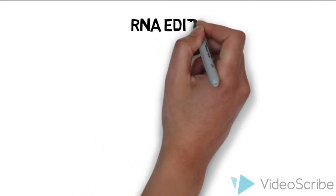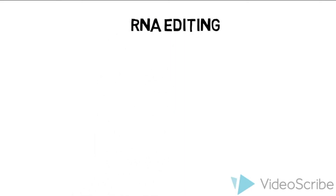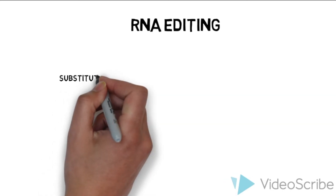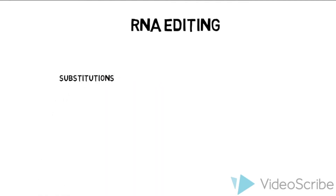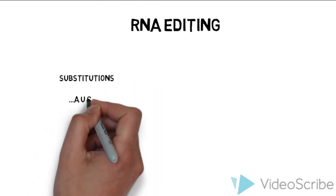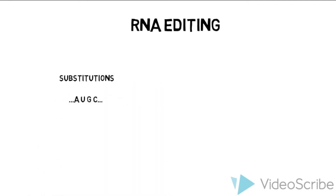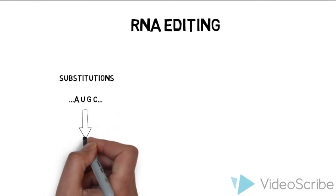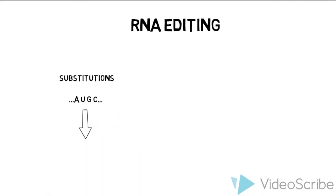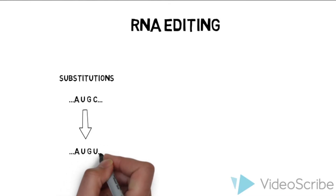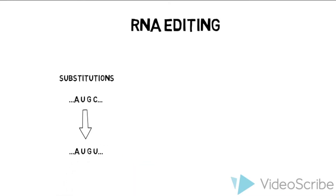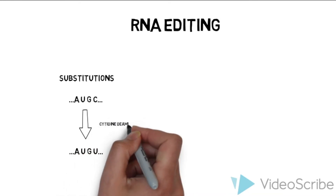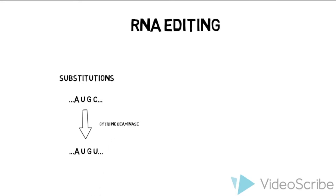The methods by which RNA is edited consist of either substitutions or insertions/deletions. Substitutions are where one nucleotide is substituted for another, such as a C becoming a U via the enzyme cytidine deaminase, or an A becoming an I via the enzyme adenosine deaminase.